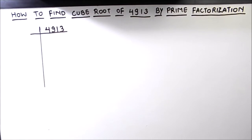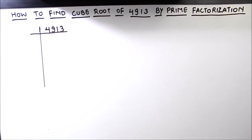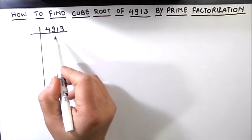Hello everyone, today in this video we are going to learn how to find the cube root of 4913 using the prime factorization method. In this method we divide the number by prime numbers to find its prime factors. After finding the prime factors, we write the number as a product of its prime factors, and by taking the cube root we can find the answer. So let's start dividing.